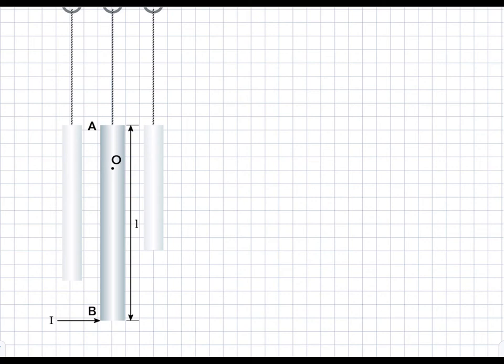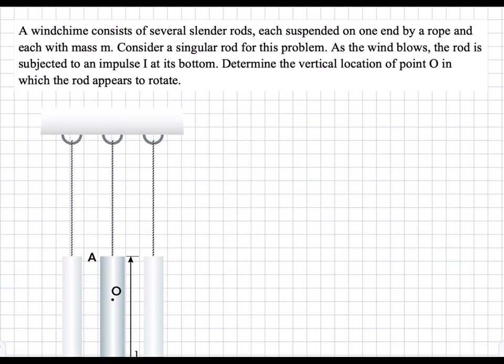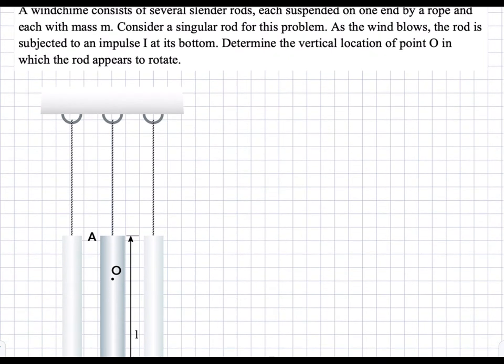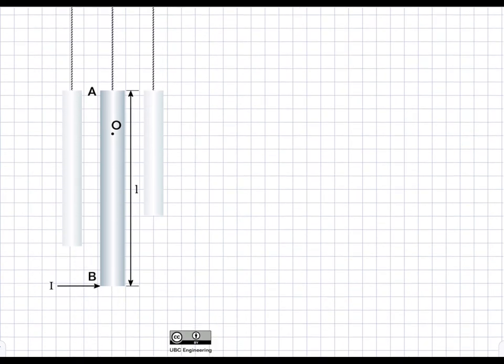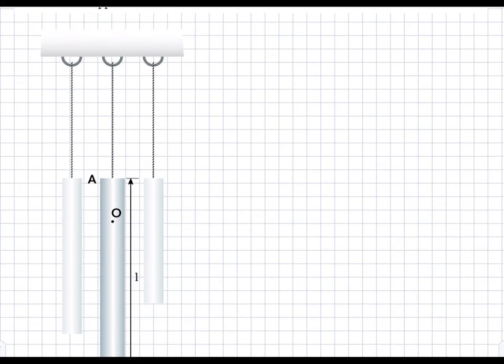This is an impulse and momentum question, and this question doesn't have any numbers — it's just theoretical, so we're not solving for a numerical solution. We're going to get the solution in terms of l. We're going to start with an impulse and momentum balance about x, and we'll draw the free body diagram on the side with all the forces.